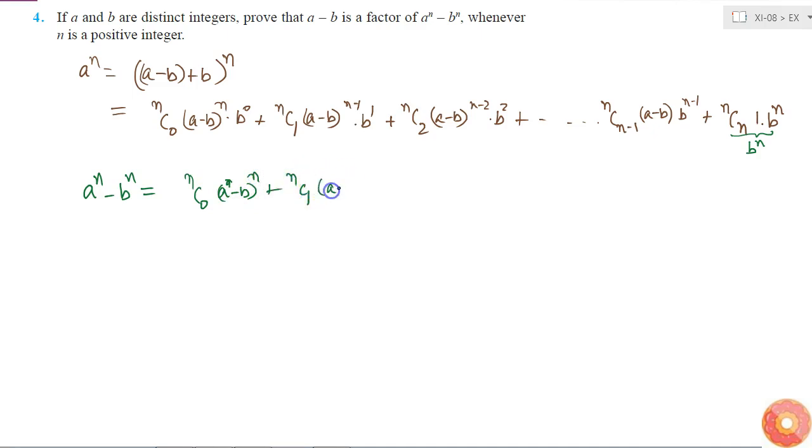...plus nC1 times (a-b) to the power n-1 times b, plus nC2 (a-b) to the power n-2 times b squared, plus so on up to nC(n-1) times (a-b) times b power n-1, right?